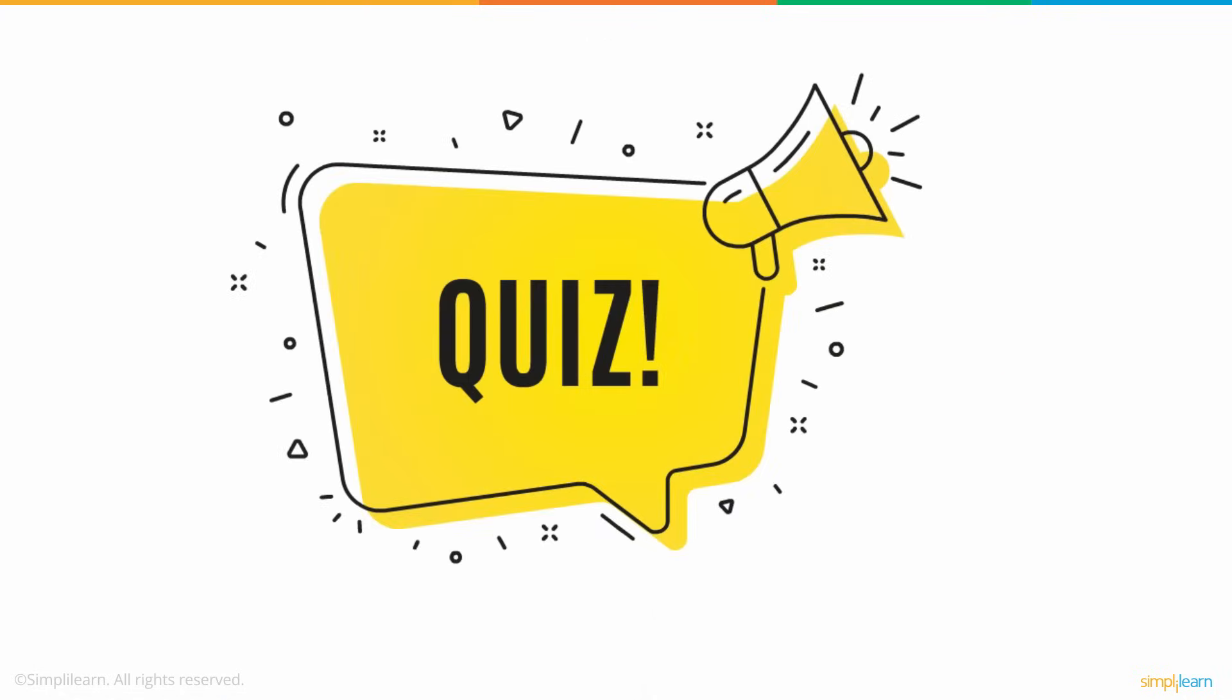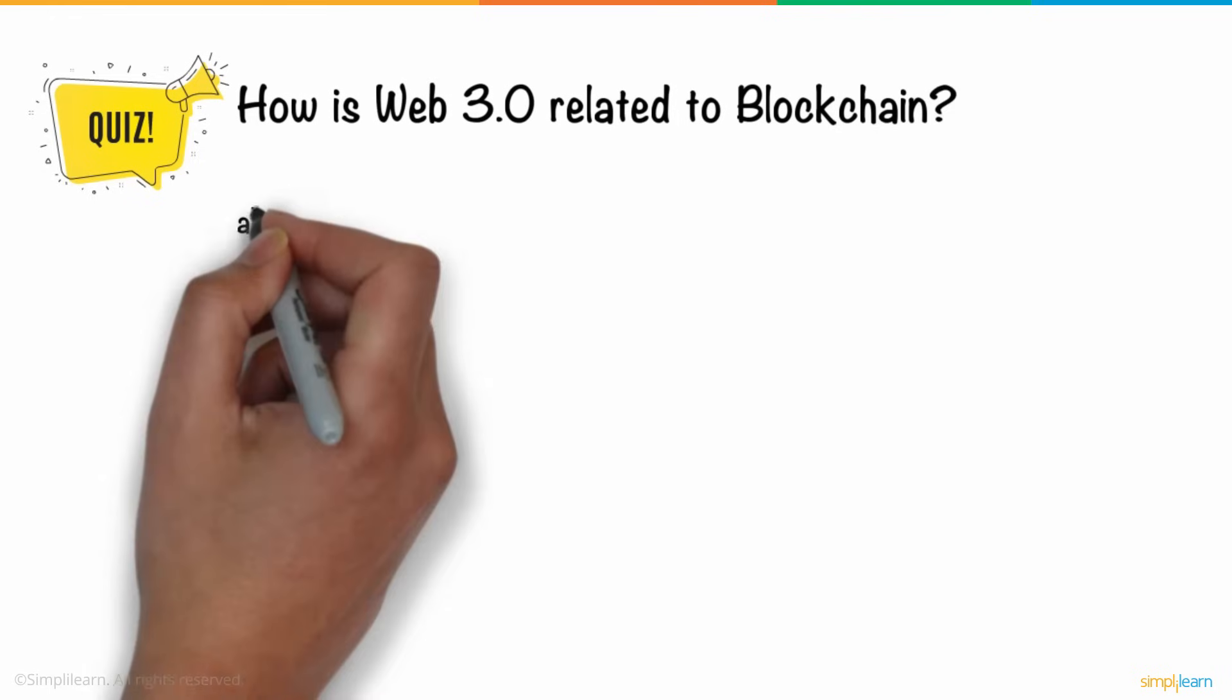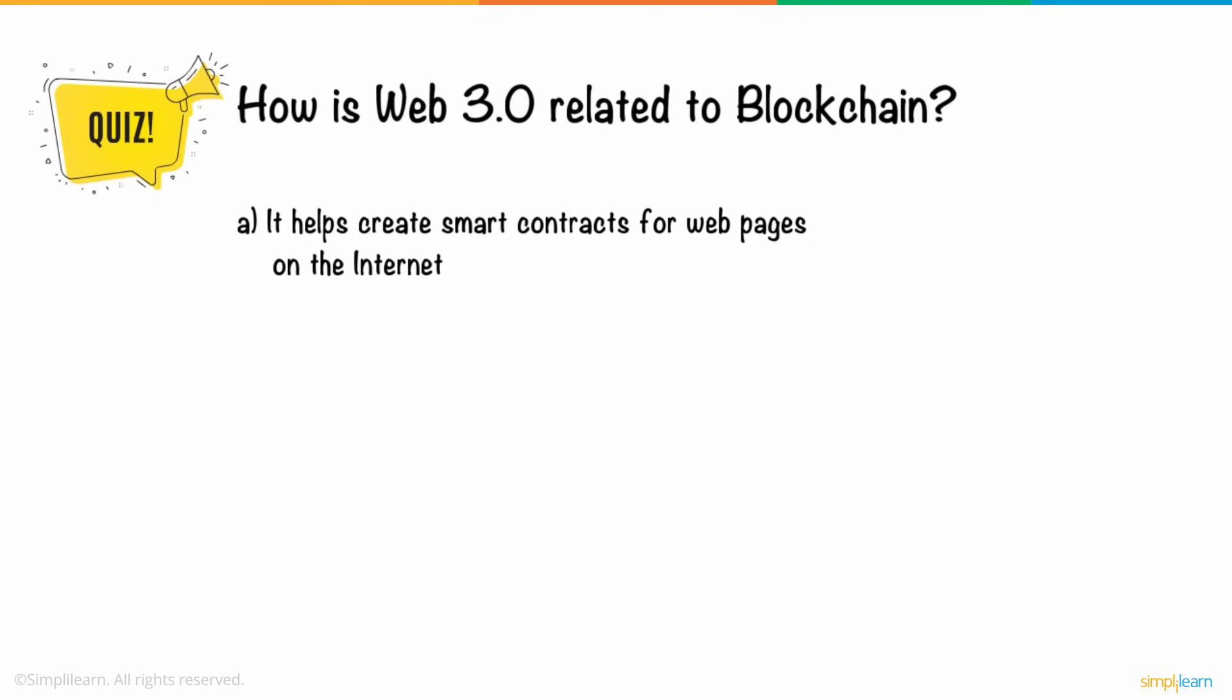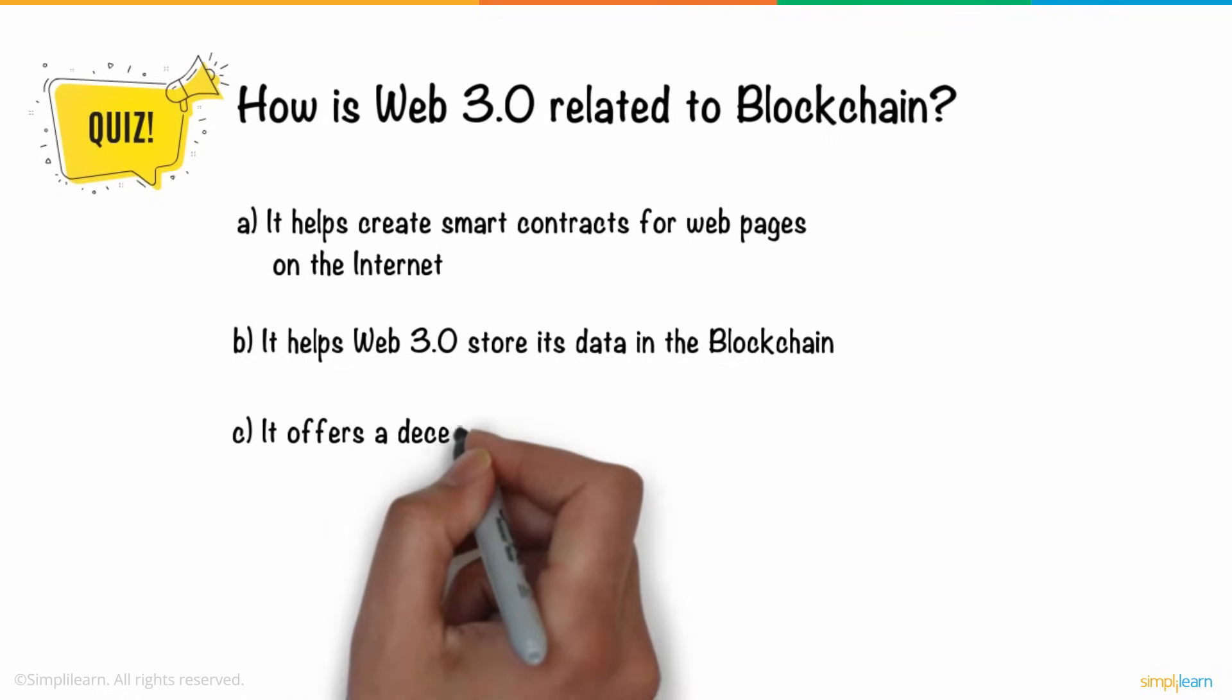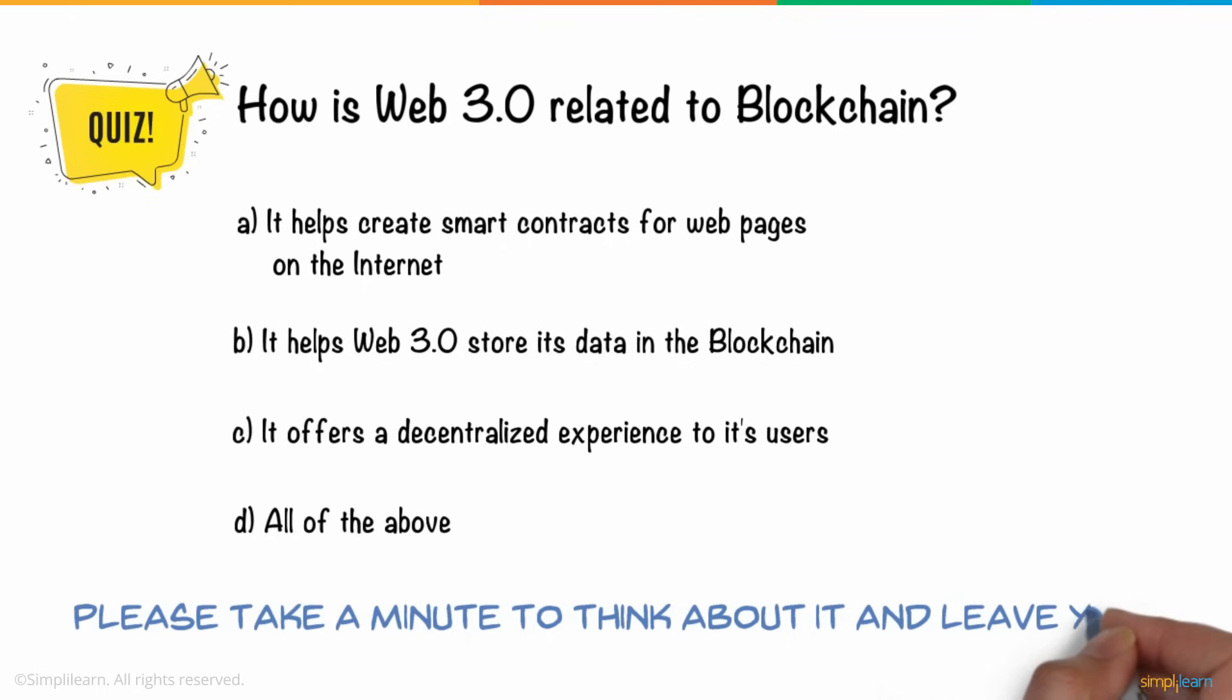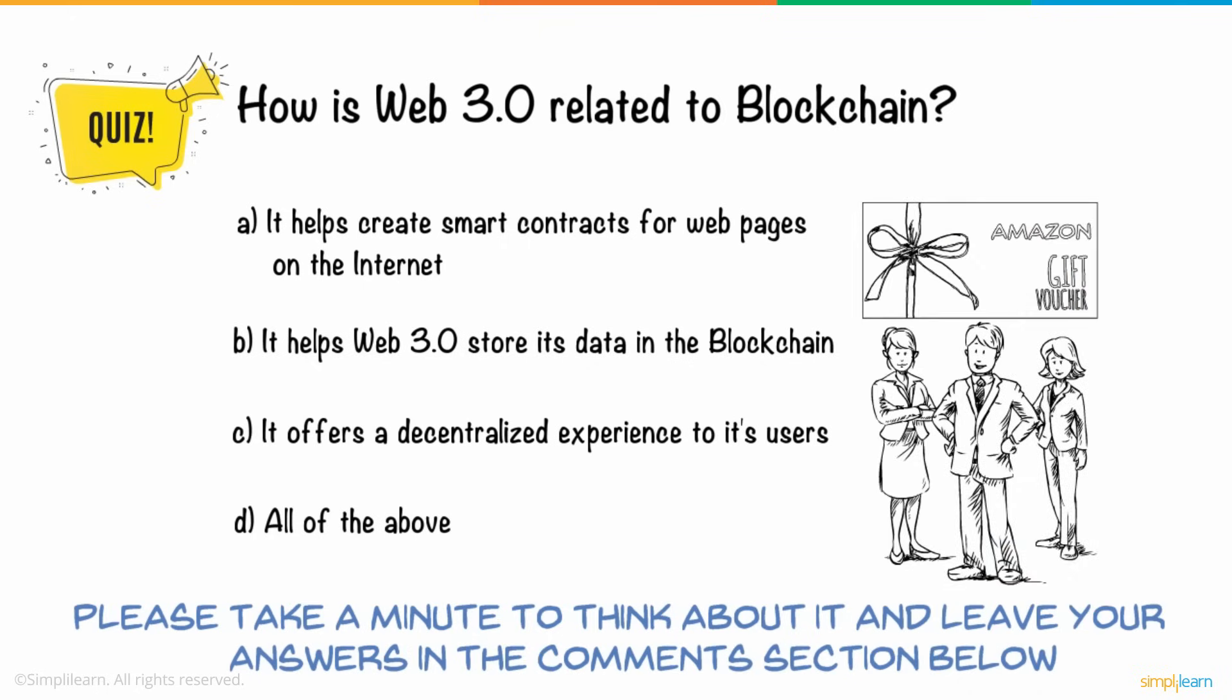So, here is a question for you. How is Web 3.0 related to blockchain? A. It helps create smart contracts for webpages on the internet B. It helps Web 3.0 storage data in the blockchain C. It offers a decentralized experience to its users D. All of the above. Please take a minute to think about it and leave your answers in the comments section below. Three lucky winners will receive Amazon gift vouchers.